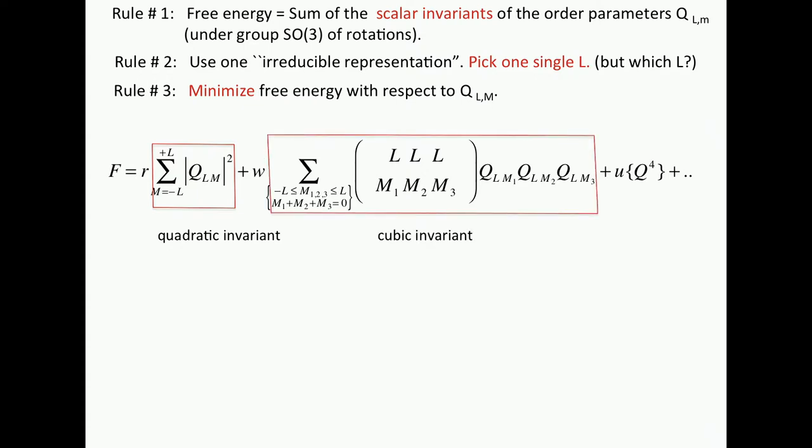Things get a little hairier if you go to the cubic invariant. Here's how it looks like. You sum over all M1, M2, and M3. And as Sergei already mentioned, M1 plus M2 plus M3 is zero. These are now three terms. Q M1, L M1, L M2. These mysterious things are called Wigner 3J symbols. Now either you have had physics or chemistry and chemists have seen them. And if you haven't, don't worry. We'll see in a moment where they come from.